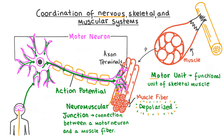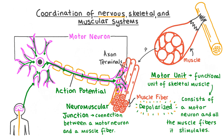A motor unit is the functional unit of skeletal muscle, consisting of a motor neuron and all of the muscle fibres that it stimulates. In humans, one motor unit can connect to between five and over one thousand muscle fibres at neuromuscular junctions. This means that all of the muscle fibres receive stimulation simultaneously and therefore contract at the same time, and the stimulation of all the motor neurons in the muscle summates to provide a powerful contraction.